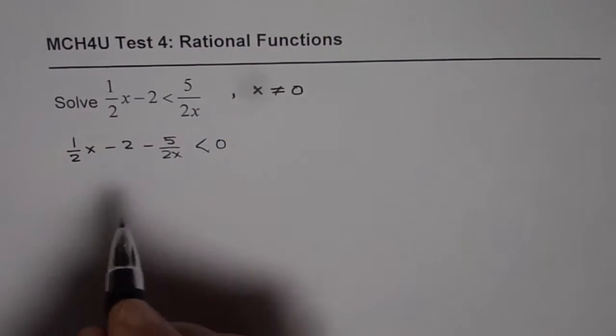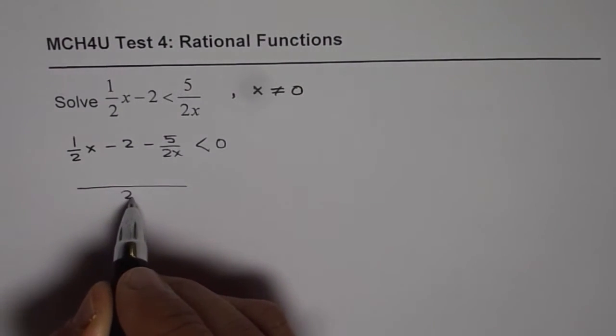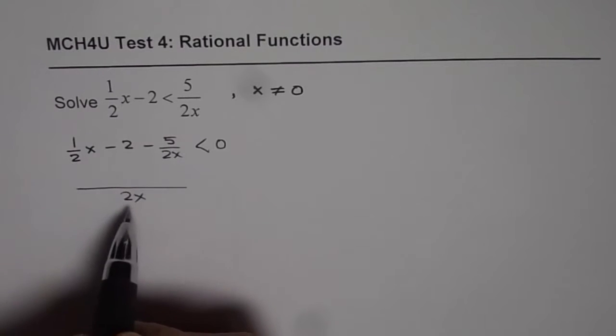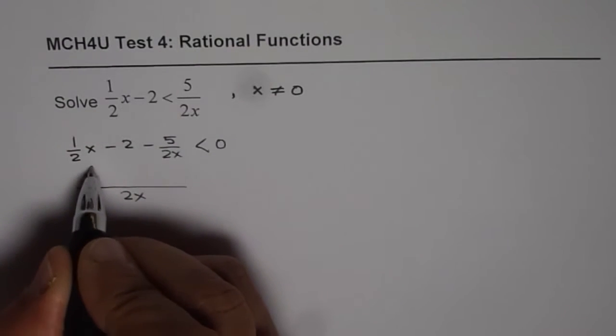Now, let's take a common denominator and in this case the common denominator is 2 times x. So, to make 1/2 x as 2 times x, we need to multiply both by x. So, we get x squared in the numerator.